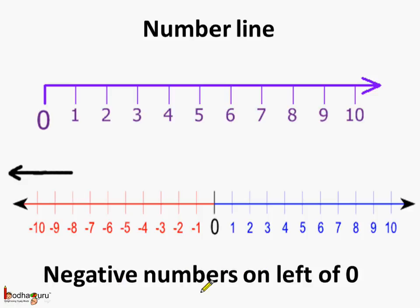So negative numbers are on the left side of 0 and the positive numbers are on the right side of the 0. So this is the number line representing integers.